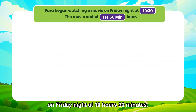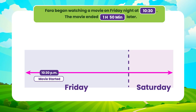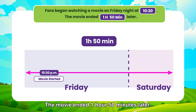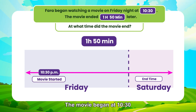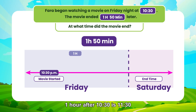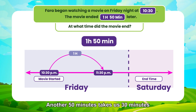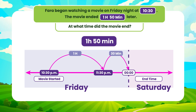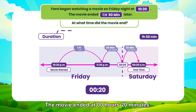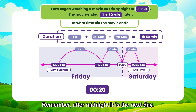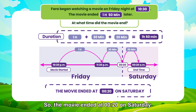Time to solve the next problem. Farah began watching a movie on Friday night at 10 hours 30 minutes. The movie ended 1 hour 50 minutes later. At what time did the movie end? The movie began at 10.30. One hour after 10.30 is 11.30. Another 50 minutes takes us 30 minutes up to midnight, and another 20 minutes after midnight. The movie ended at 00 hours 20 minutes. Remember, after midnight it is the next day. So the movie ended at 00.20 on Saturday.